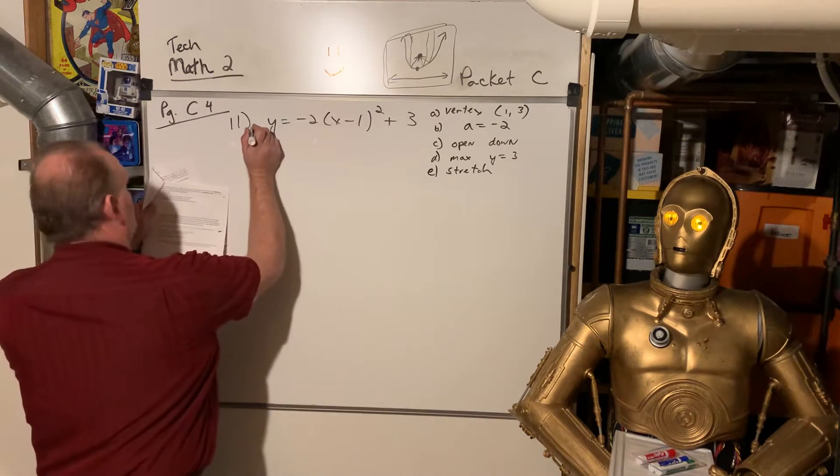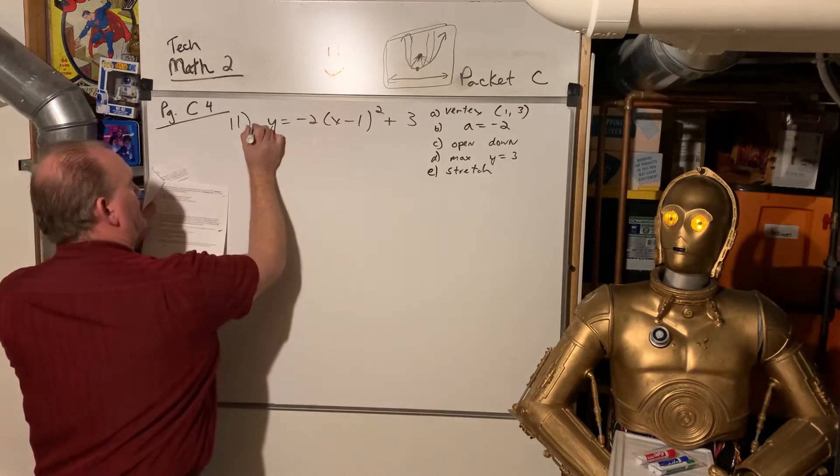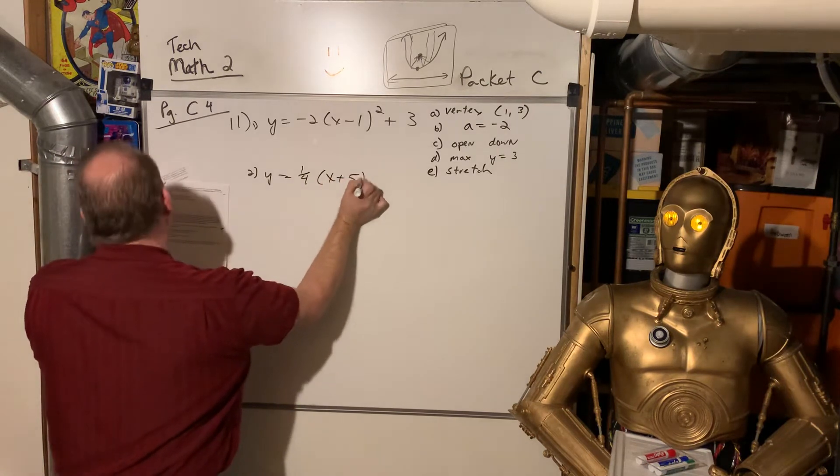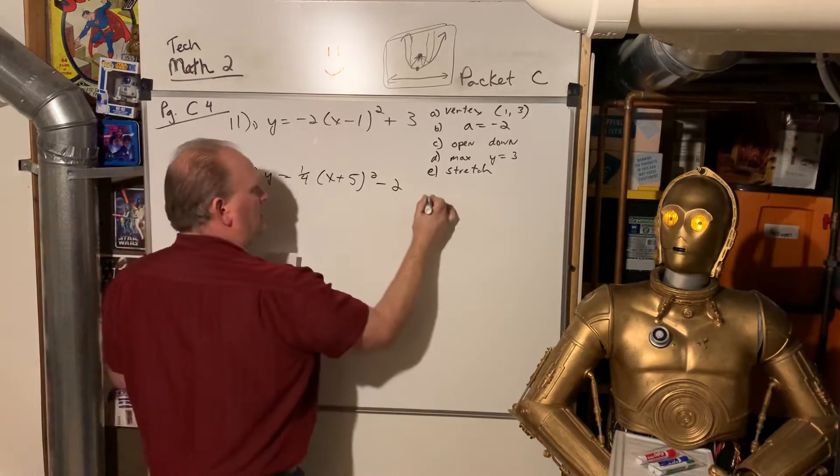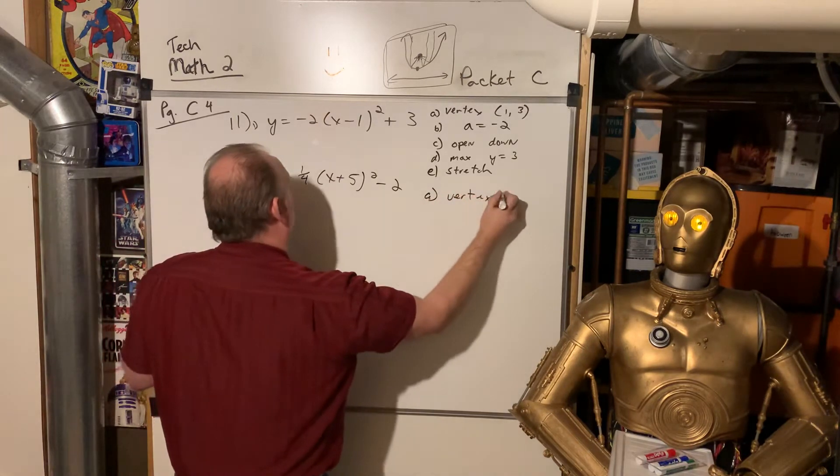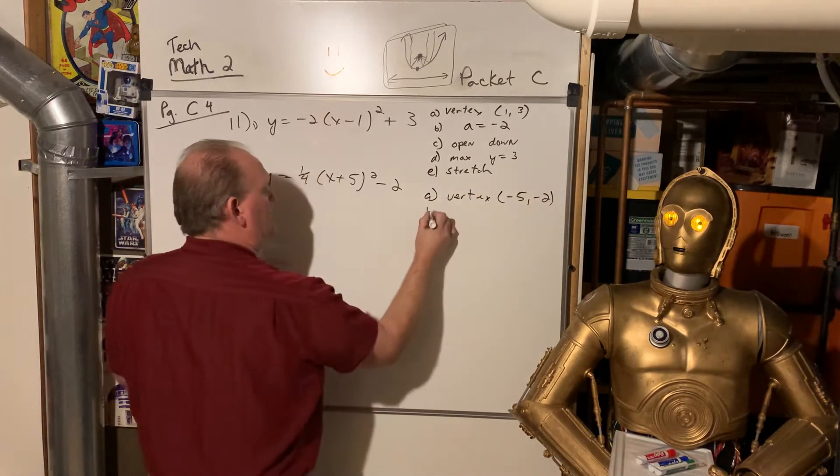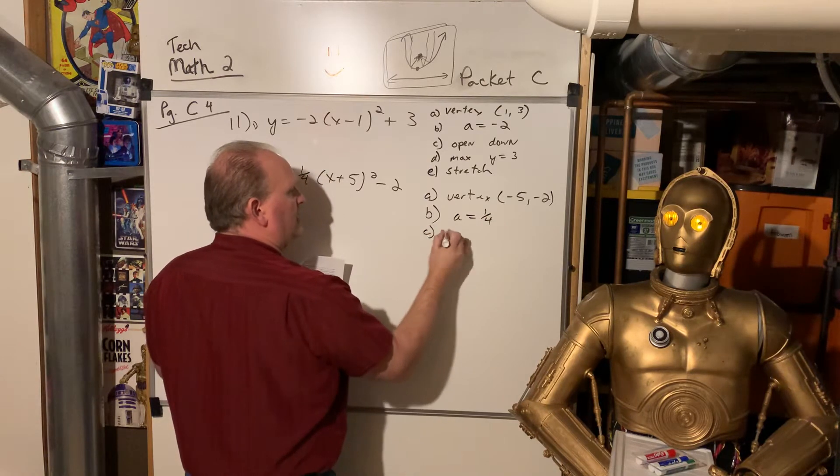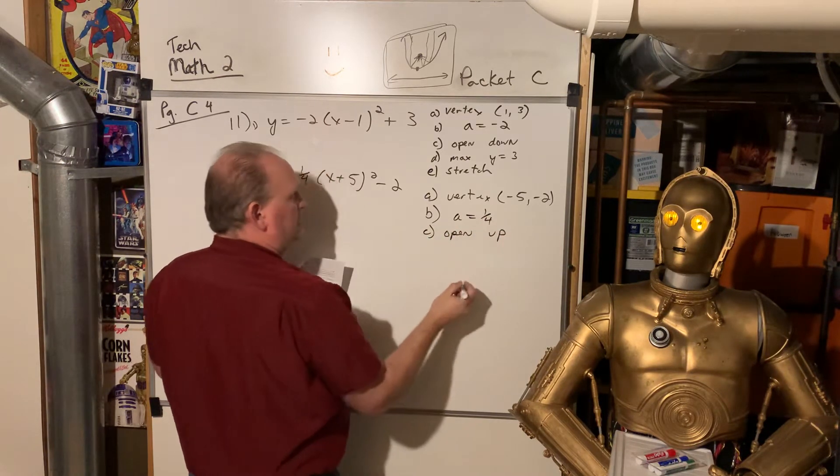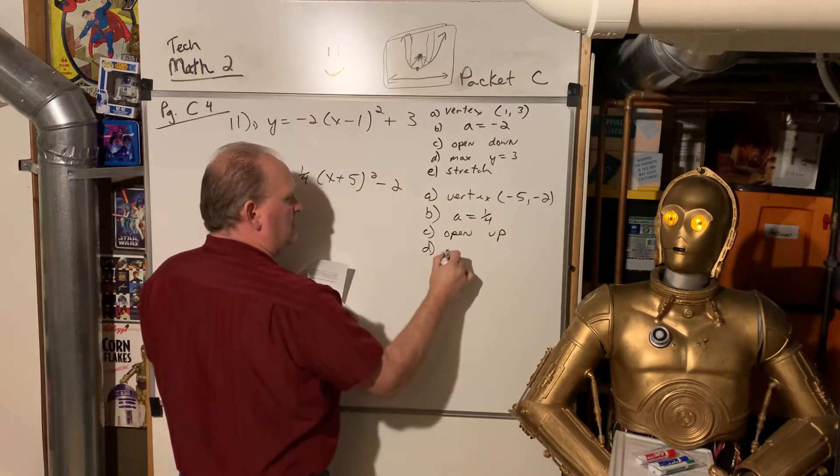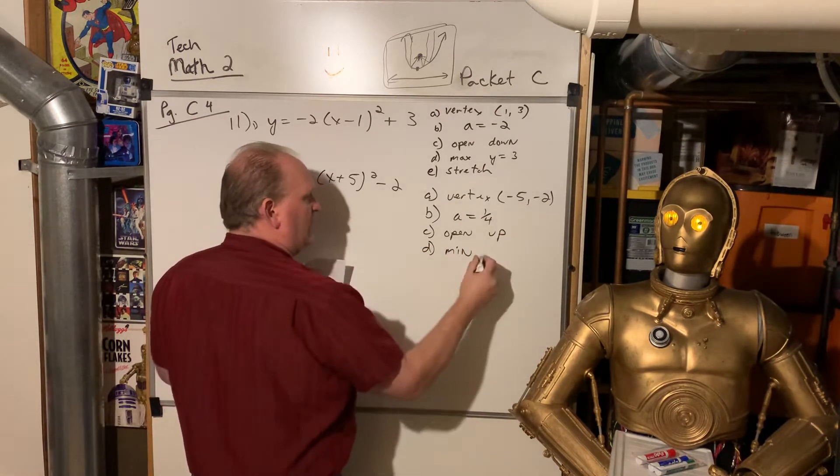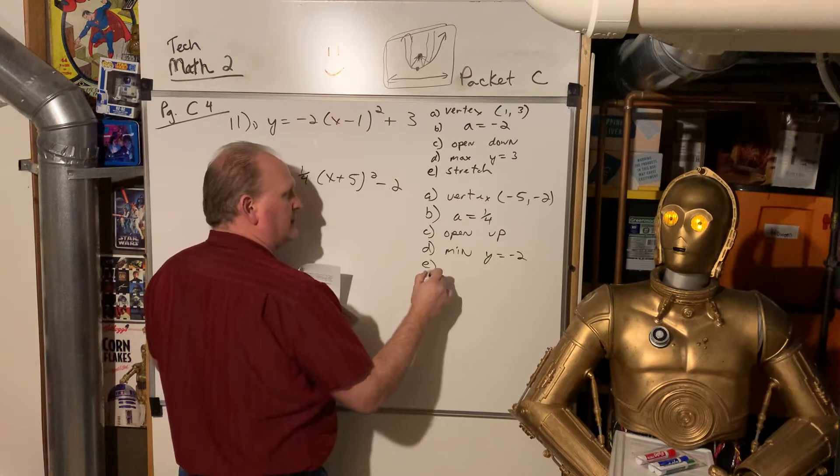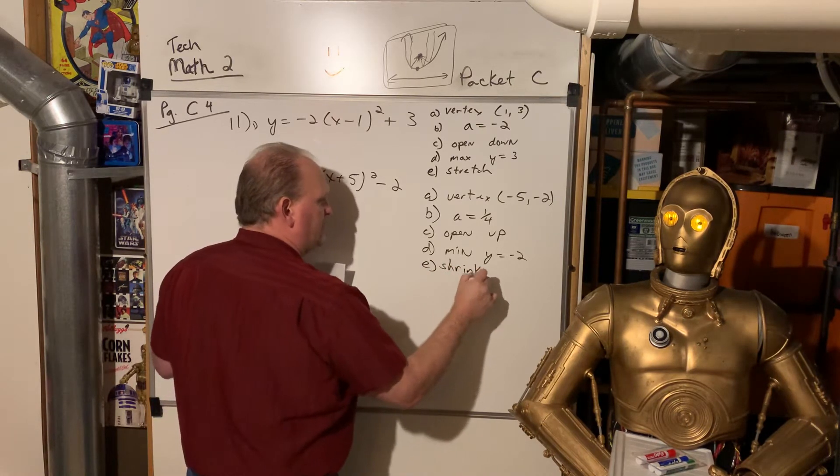Let's look at 11, number 2. They've got y = (1/4)(x + 5)² - 2. So the vertex is going to be negative 5, negative 2. A is 1/4. That's going to open up. It's going to be a minimum now, because it opens up, of y equals negative 2. And then, it's going to be a shrink instead of a stretch.